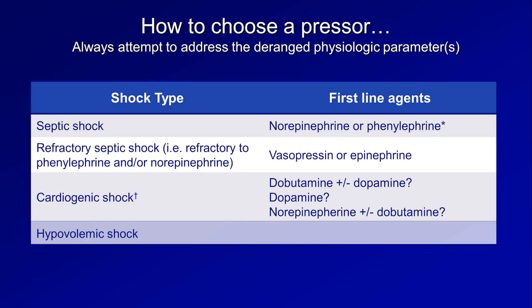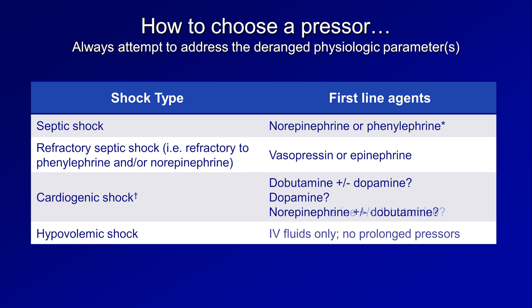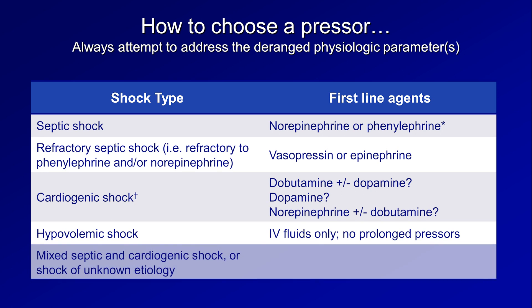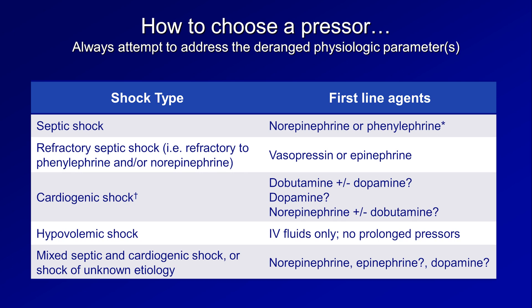What's the first-line pressor in hypovolemic shock? It's a trick question — IV fluids only, with no prolonged pressors. If you are giving pressors to a patient in hypovolemic shock, it means you haven't given enough fluids. If pressors are briefly necessary to prevent hemodynamic collapse while fluids are running in, no one really knows which pressor is best. For mixed septic-cardiogenic shock or shock of unknown etiology, norepi is probably the least controversial choice, though some clinicians use epi or dopamine.